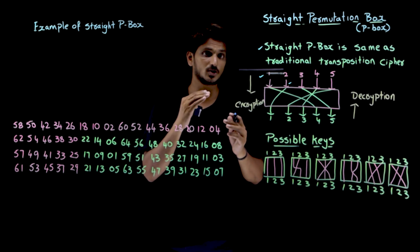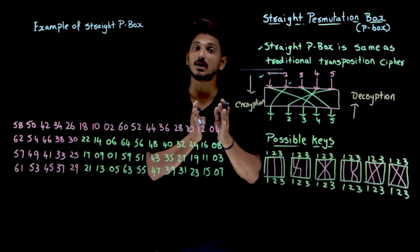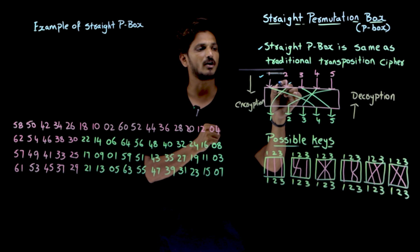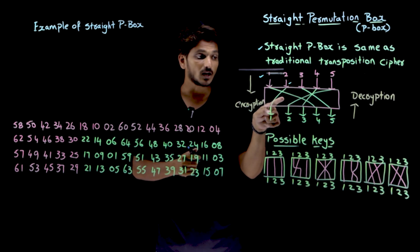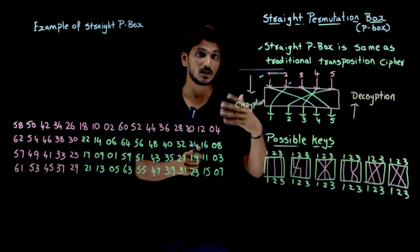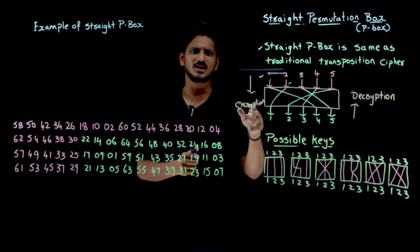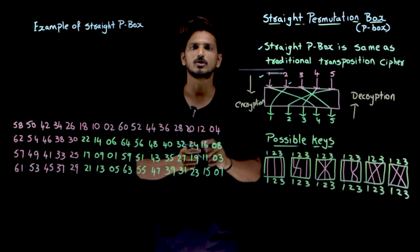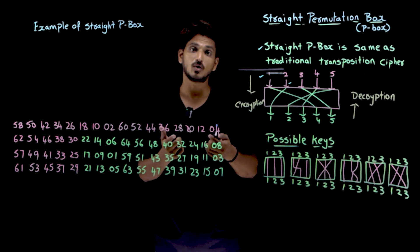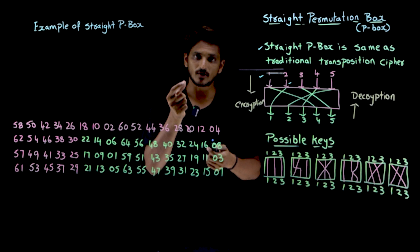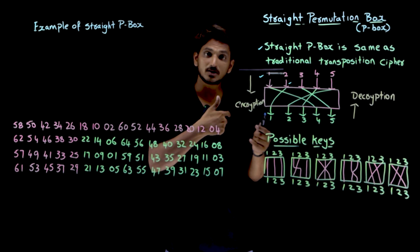The second point to understand is how many possible keys are available if you have five bits. This shown example is one possible key, but there are multiple key possibilities. It is not compulsory to take the first position bit to the fourth position — you can take the first position bit to the third position or to the fifth position. All these are possibilities.